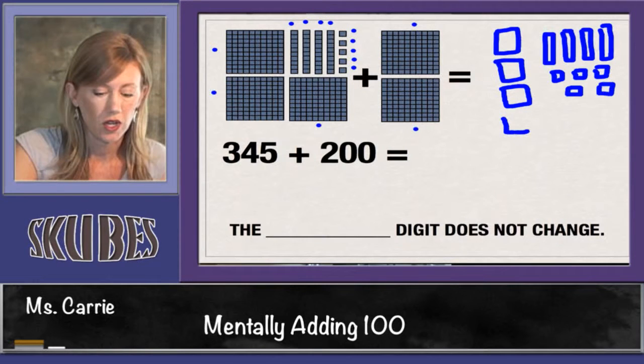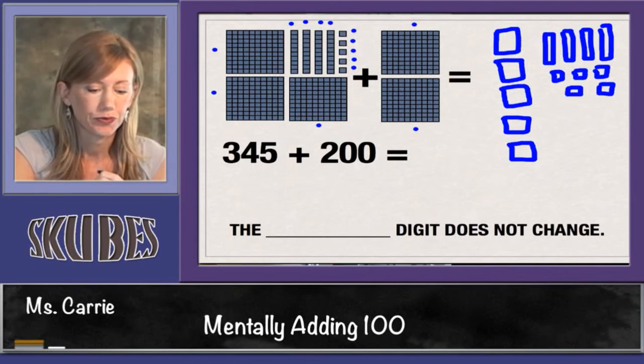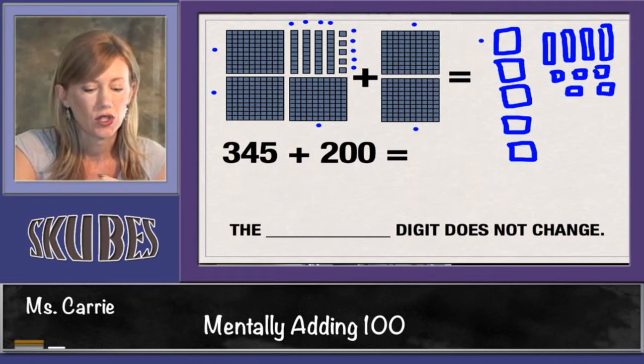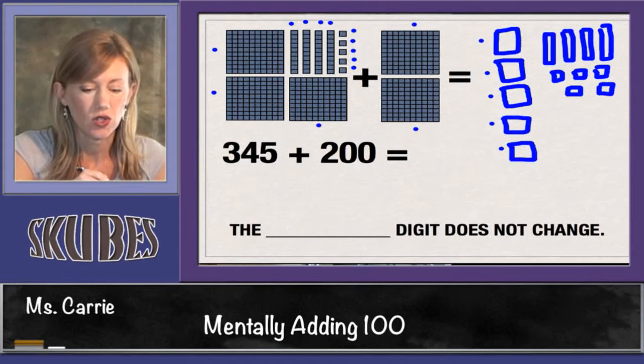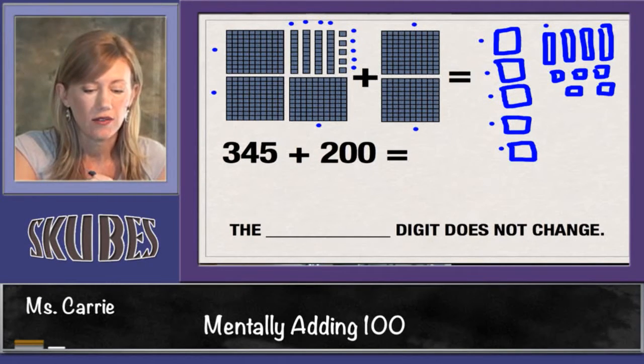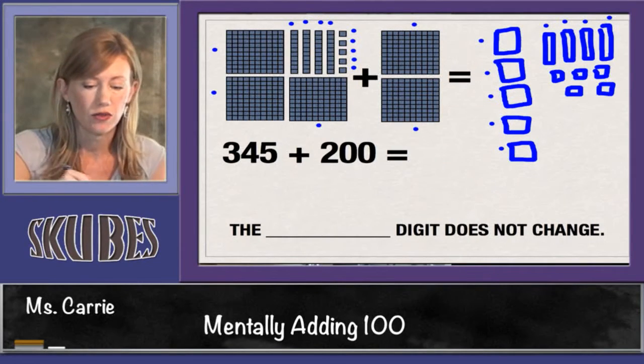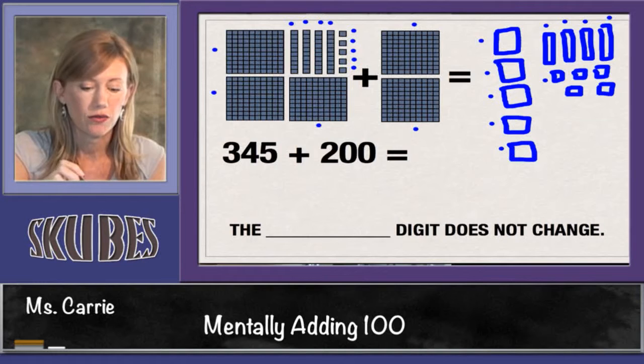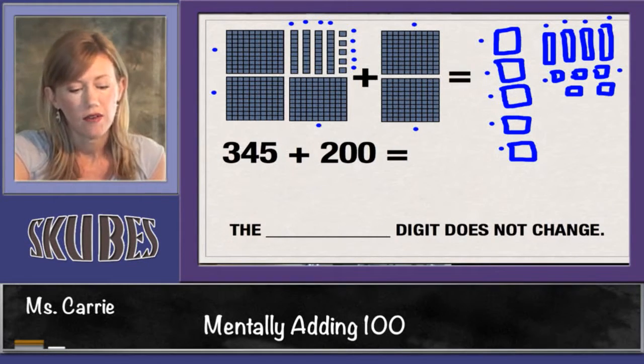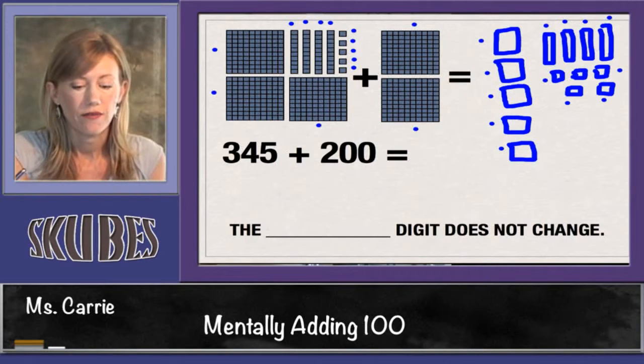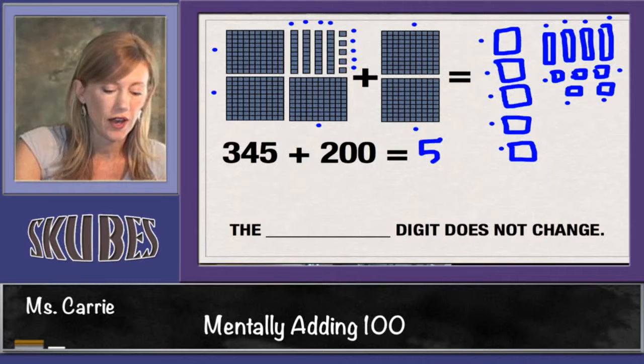So I'm going to draw 100, 200. Let's add it up and see what we get. 100, 200, 300, 400, 500, 510, 520, 530, 540, 541, 542, 543, 544, 545. Our answer is 545.